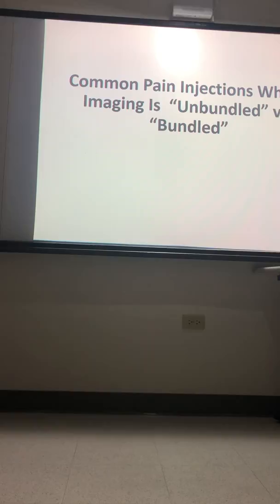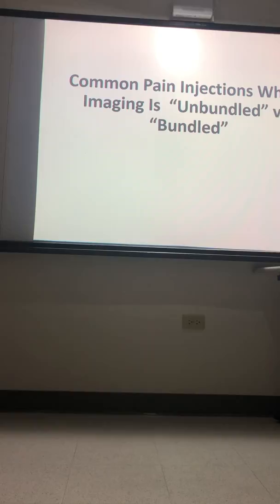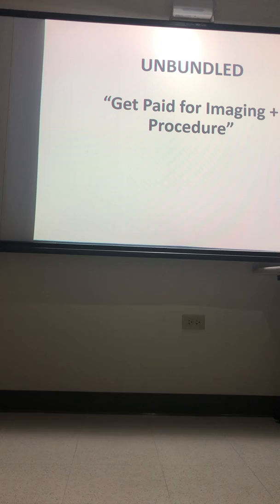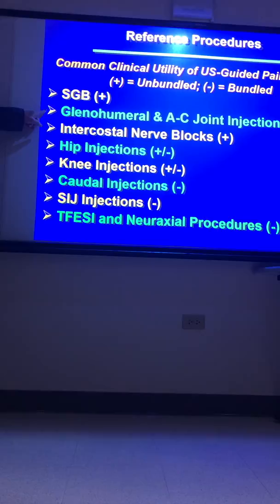Let's look at where it's unbundled versus bundled — unbundled of course is better; you get paid for both the procedure and the imaging. Going through these eight procedures: stellate ganglion block — it's unbundled. You get paid for the stellate block and for the use of imaging. Glenohumeral and AC joint injections — it's both. It's bundled if you use ultrasound, meaning you don't get an extra rate, but it's unbundled if you use fluoro. For some reason, Medicare continues to pay you a higher rate for using fluoro but not ultrasound for shoulder injections.